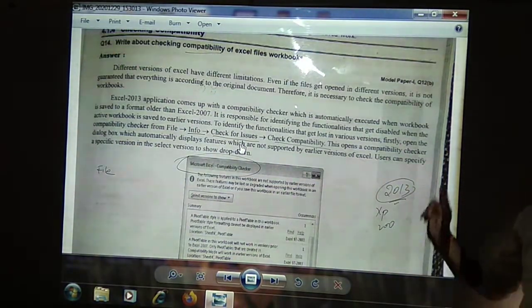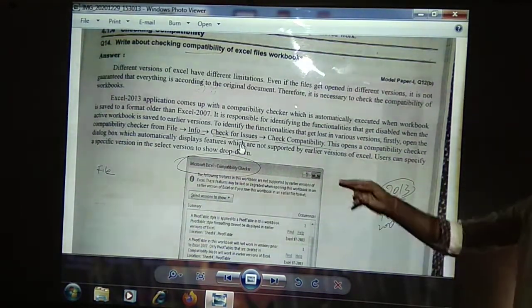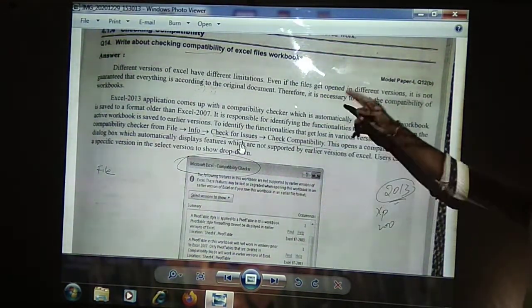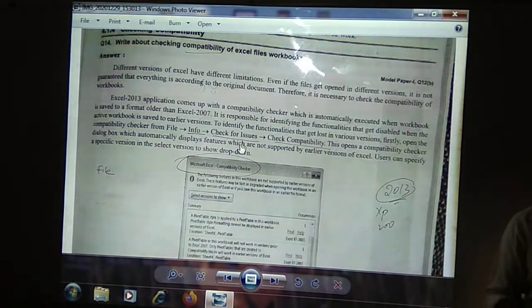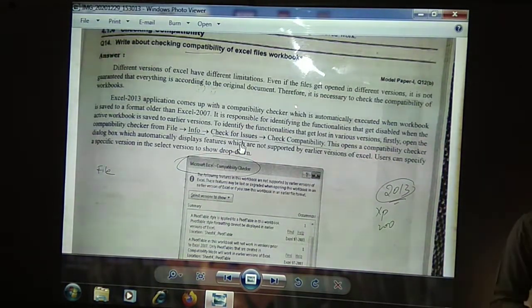When you are opening the file in the previous version, what will be disabled from your file? That should be known. So, in order to know those particular details, we need to use the checking compatibility. I hope it is clear why we are going for the checking compatibility option.